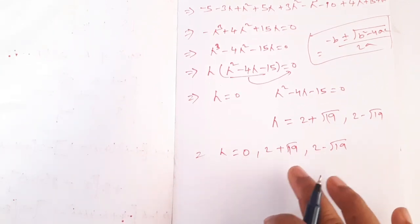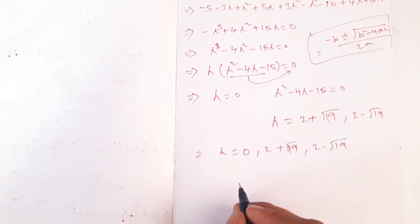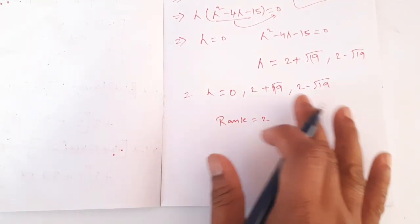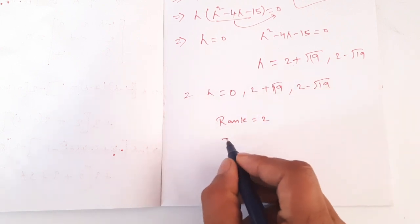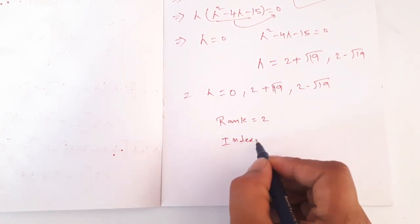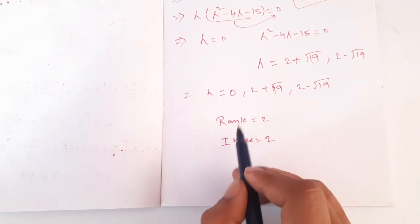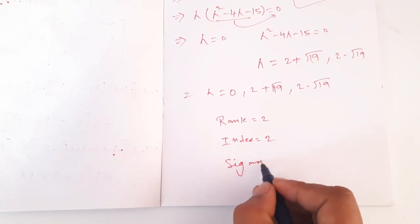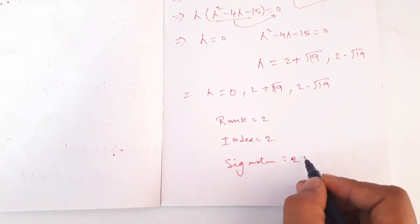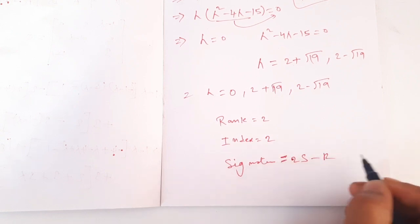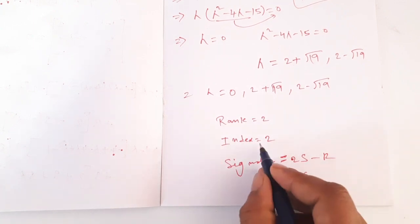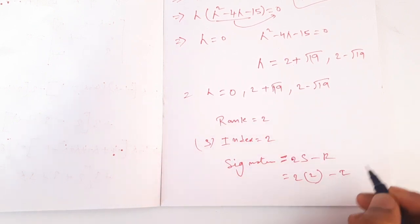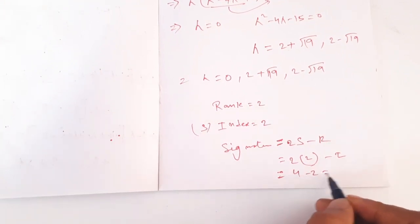So lambda equals 0, 2 plus or minus root over 19, and 2 minus root over 19. So lambda equals 2. The eigenvalues have been found. The index number and rank are determined. Rank 2 and rank 2. The signature, covalent, is 2s, 2s minus rank — 2s index number, s index, and minus rank 2.